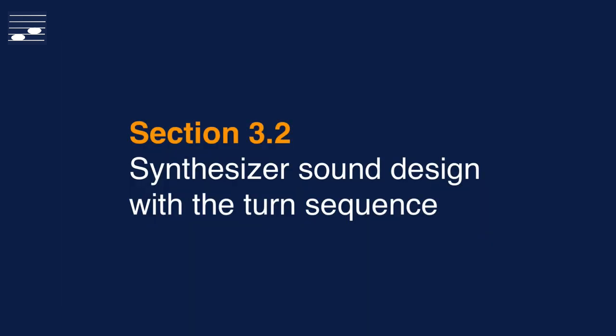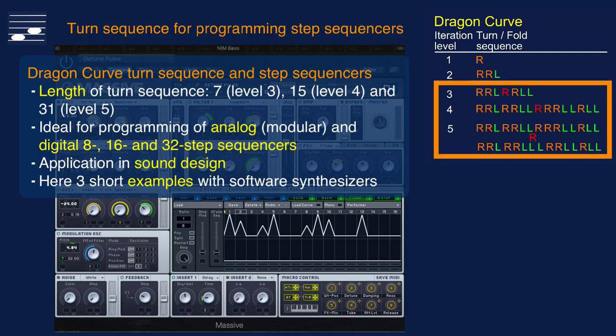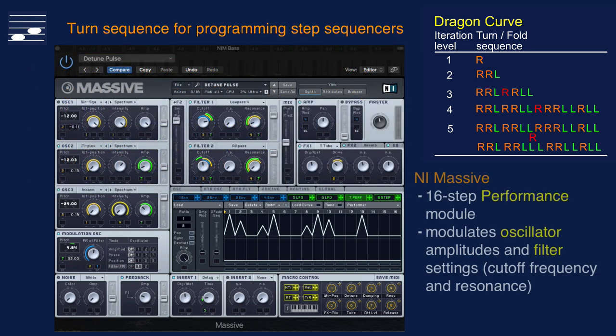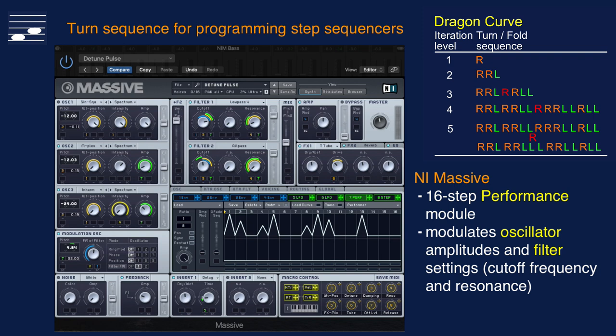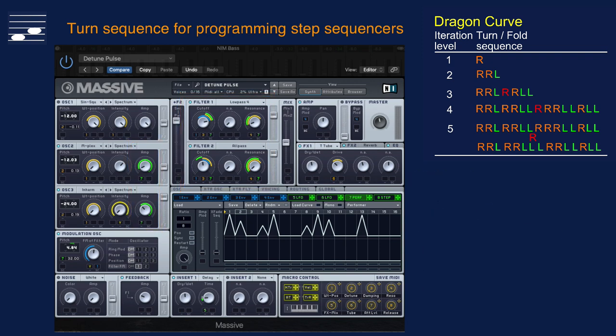The Dragon Curve Fractal Turn Sequence may also be used in synthesizers for the sound design. The pattern length at level 3 to 5 make them highly suitable for implementation in analog or digital N-step sequencers, where N is 8, 16 or 32. Now I'll demonstrate three sound design examples based on this idea. The Native Instruments Massive synthesizer has a 16-step performance module. The level 4 turn sequence has been implemented in this sequencer, which is then modulating the oscillator amplitudes and the filter settings for cutoff frequency and resonance. We hear a pulsating low frequency noisy and gnarly sound.